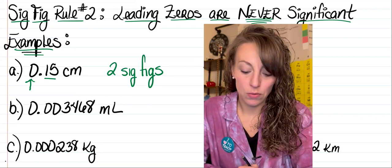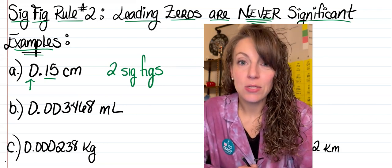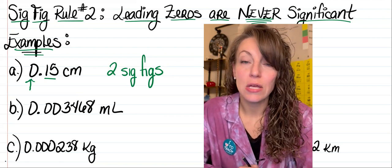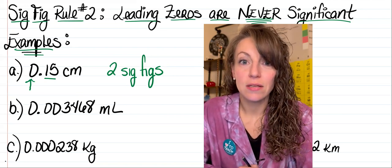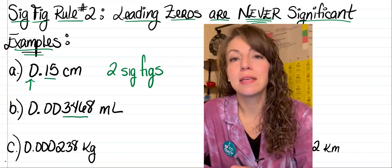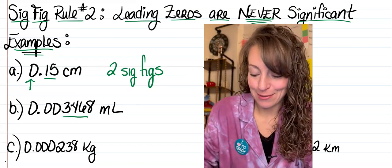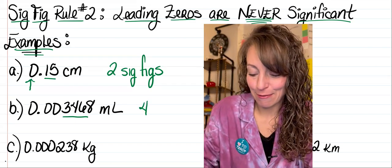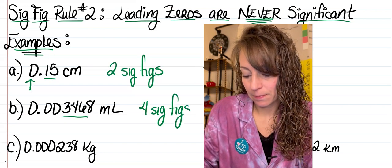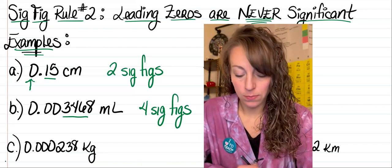For letter B, I have 0.003468 milliliters. In this particular measurement there are three leading zeros, none of which are going to be significant. However, the three, the four, the six, and the eight are significant and we will count them, so we've got a total of four sig figs.